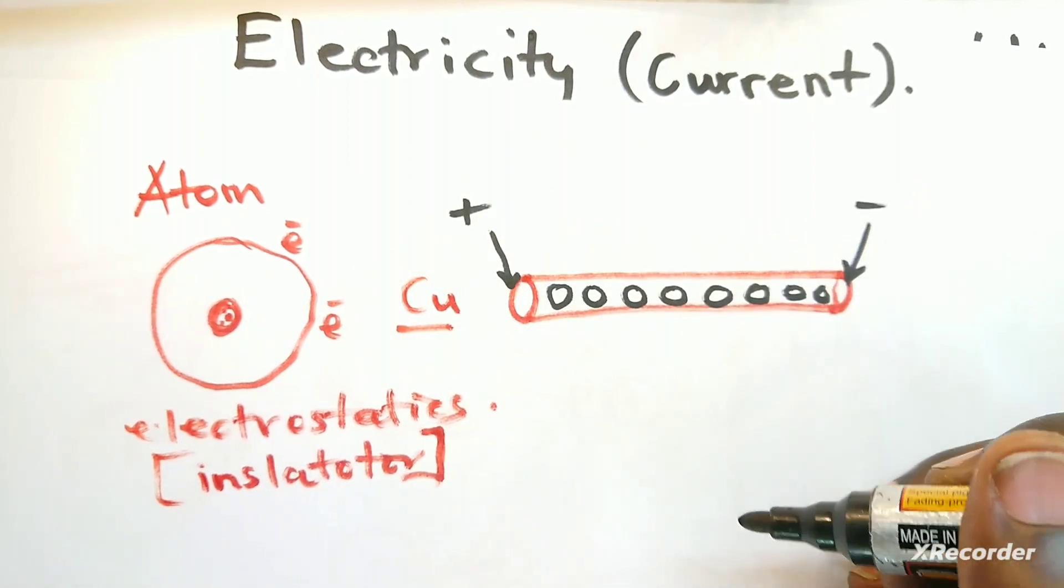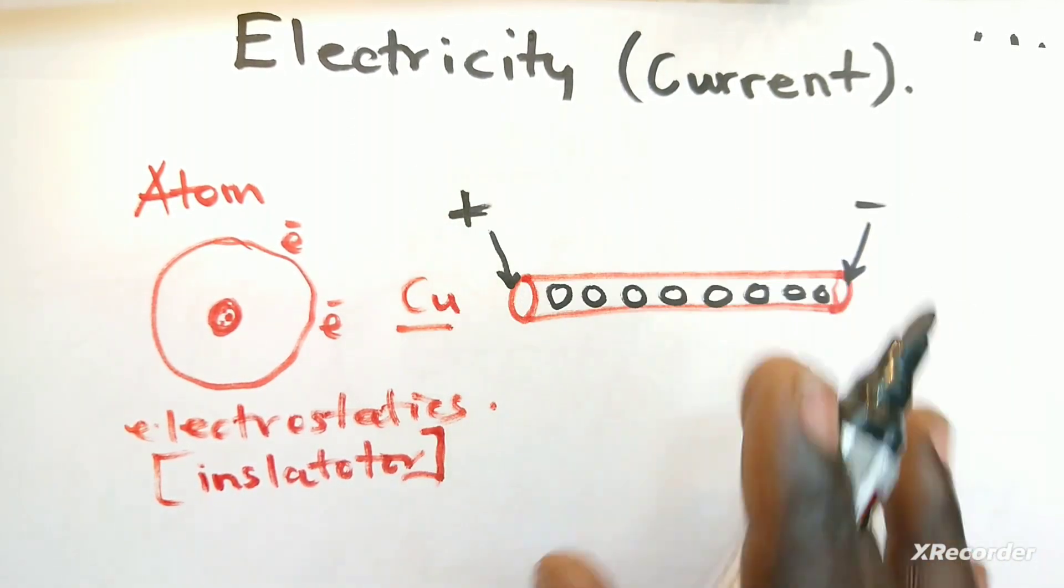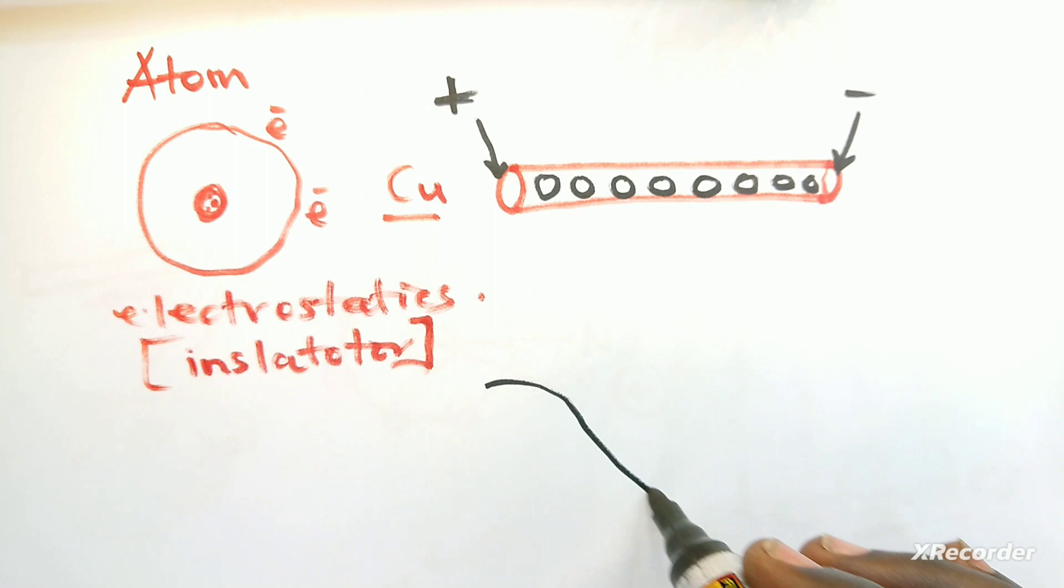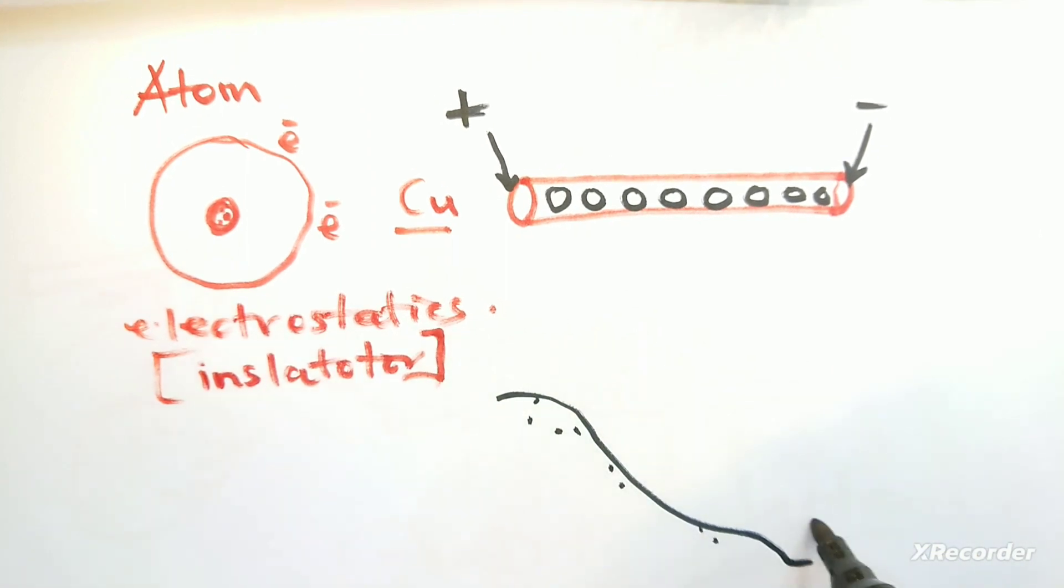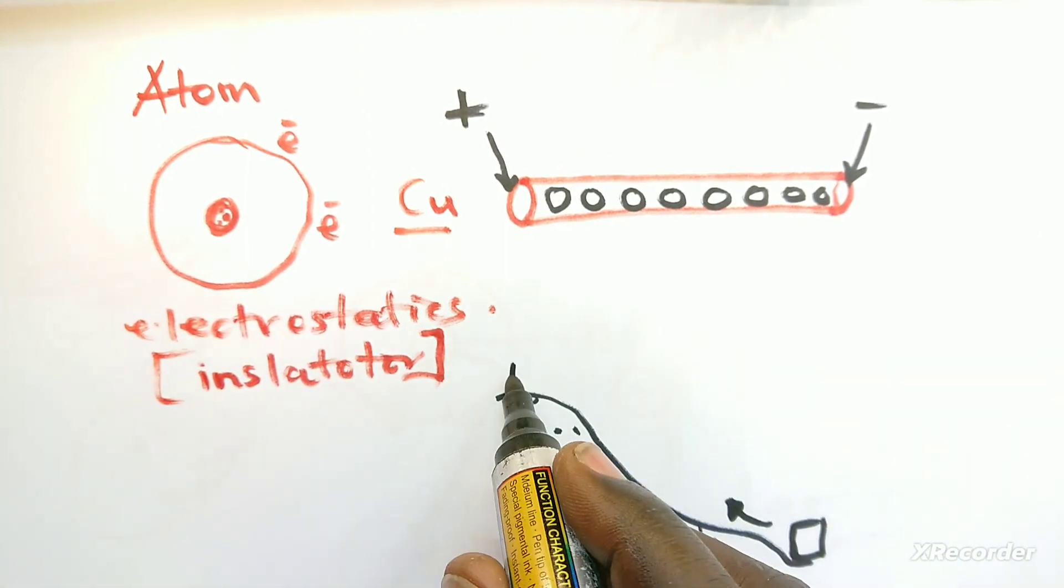We have atoms in the copper, and when we apply a voltage across, a potential difference, energy is supplied and electrons start flowing.